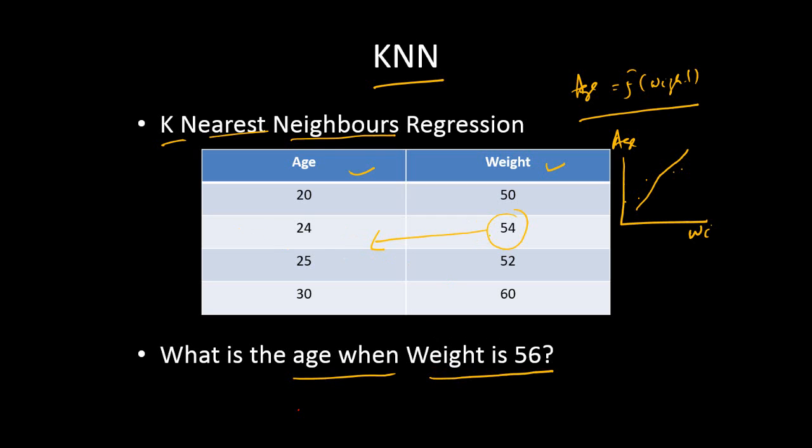Now, we have taken only one observation in this case. If we want to take two closest observations, the closest will be this one and this one: 24 and 25. 54 and 52 are very closest to 56. 60 is also the next closest. Now we have got three closest individuals. How do we predict the corresponding age with respect to the weight 56? We simply take the average of all three ages: 24, 25 and 30.